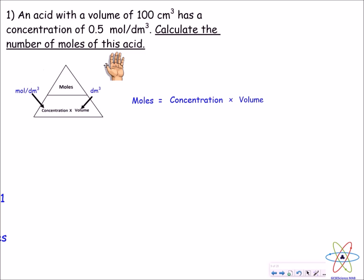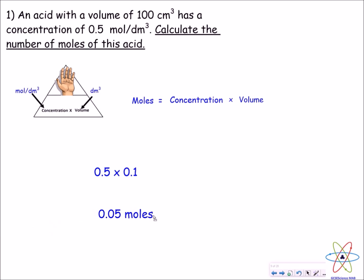Here's another question — please pause the video and have a go. In this question you have to work out the number of moles of an acid. Covering moles, we're left with concentration multiplied by volume, so we do 0.5 multiplied by 0.1. This 0.1 is 100 centimetres cubed converted to decimetres cubed, giving a final answer of 0.05 moles.